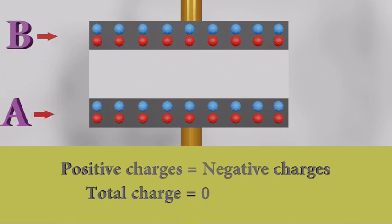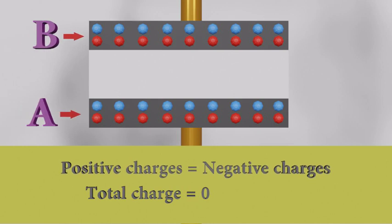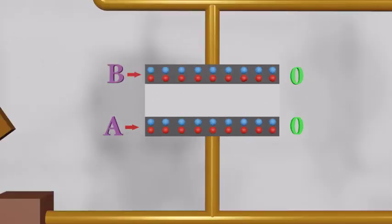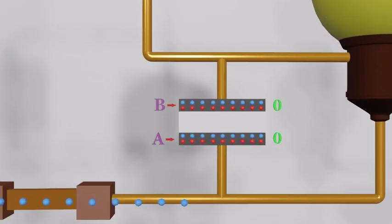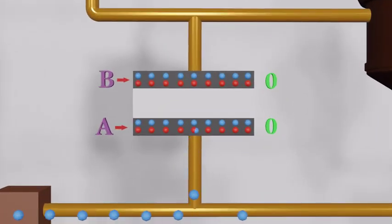Let's name the plates A and B and represent the net charge of each plate. Now we close the switch and complete the circuit — electrons start to move. One electron goes into plate A, making the net charge of plate A negative one. This extra electron can't pass through the non-conducting region, so to balance this inequality, plate B releases an electron and becomes positive one.